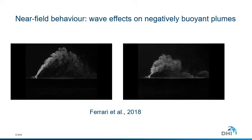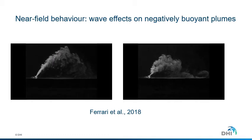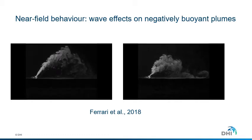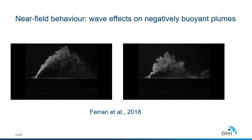Two videos from Ferrari's experiments show the comparison of an angled plume in still water on the left and in the presence of a wave on the right. For desalination brine outfalls, jets are normally placed in 10 to 15 meters of water depth, designed such that plumes almost touch the free surface before falling back to the bed under gravity. The time taken for a water particle to travel from the diffuser back to the bed is approximately 35 to 40 seconds, while wave periods can be between 5 to 15 seconds, so the plume will experience multiple wave periods during its travel.